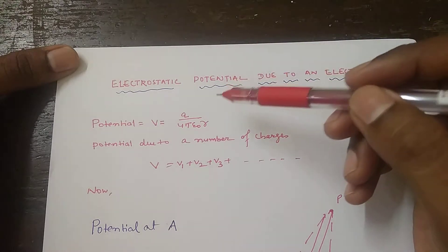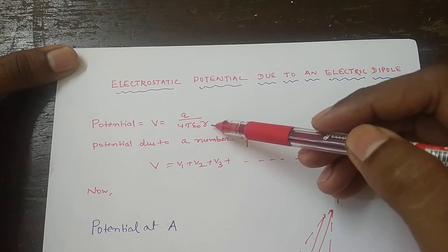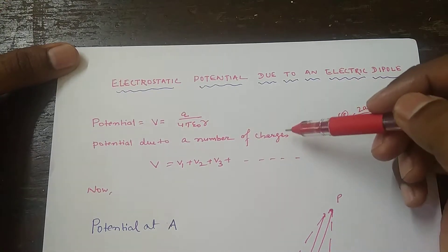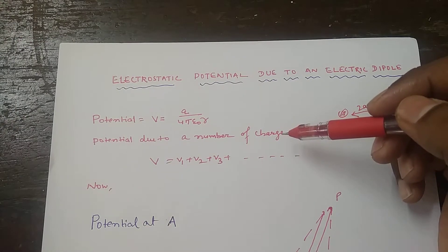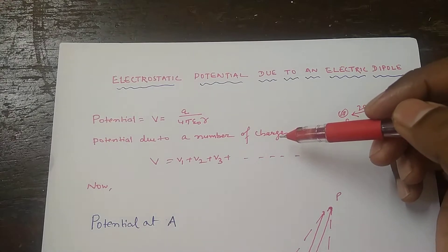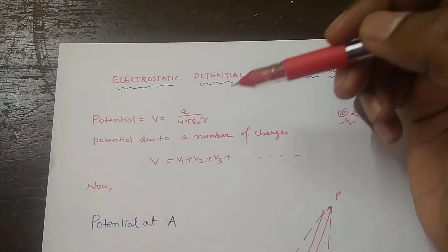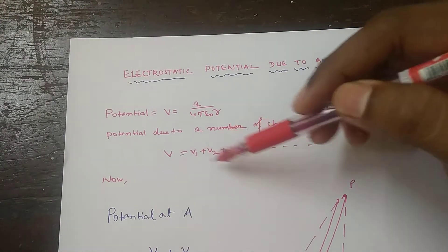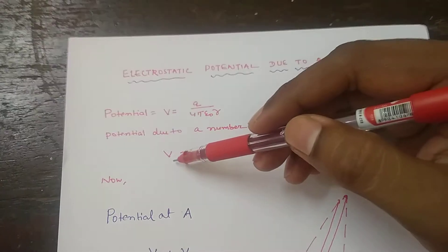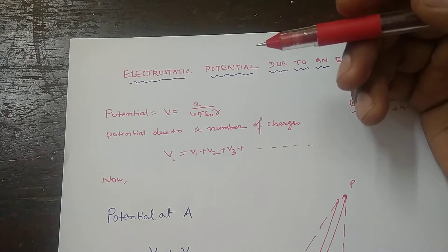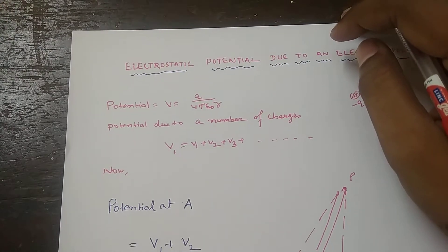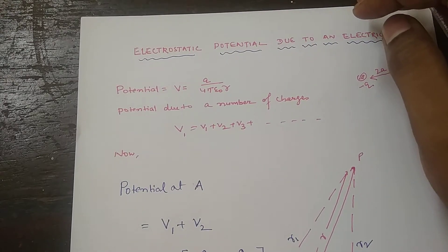The expression for the potential due to a point charge is V equal to Q divided by 4 pi epsilon naught R. For a number of charges, we add all the potentials — potential due to the first charge, second charge, third charge — to get the net potential at point P. Potential is a scalar quantity, so it can be added easily; there is no need to bother about direction.